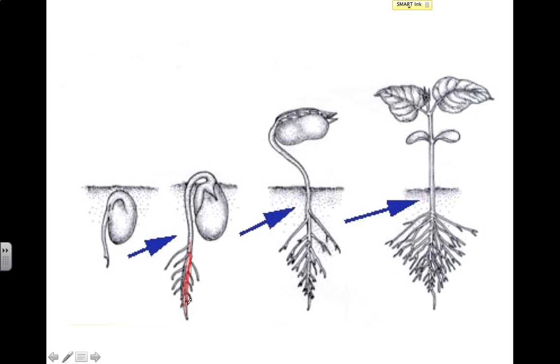Once again, carrots are taproots, dandelions are taproots. Many of the dicot trees that you have in your backyard are actually taproots in nature.